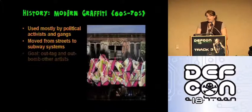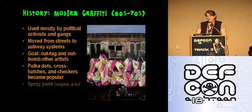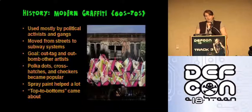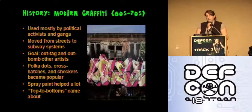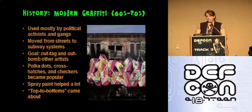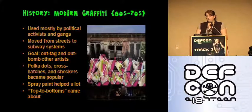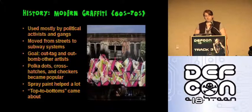In the 60s and 70s, graffiti started to gain popularity with political activists and gangs wanting to mark their territory and make themselves heard. Once it became more popular in places like New York City, graffiti migrated from the streets to the subway system. The main goal was relatively simple: out-tag and out-bomb the other graffiti artists. Bombing refers to creating large, more elaborate pieces of graffiti art, usually done by breaking into closed-off areas like subway depots after hours. Designs such as polka dots, crosshatches, and checkers became more popular, and the use of spray paint increased. The appearance of top-to-bottoms — works spanning the entire height of a subway train — became popular. This period is referred to as the Golden Age.